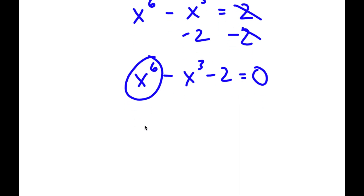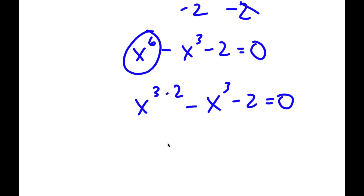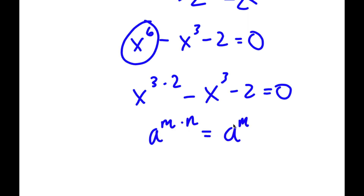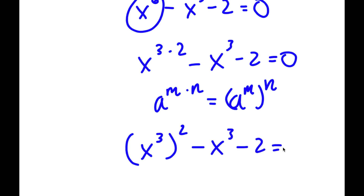Now, x to the power of 6 here, I'm going to write as x to the power of 3 times 2. And if I have something in the form a to the power of m times n, this is equal to a to the power of m to the power of n. So x to the power of 3 times 2 I'm going to write as x to the power of 3 to the power of 2. So I have this minus x to the power of 3 minus 2 is equal to 0.